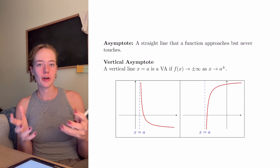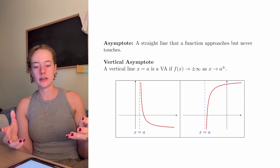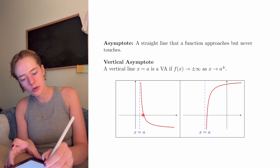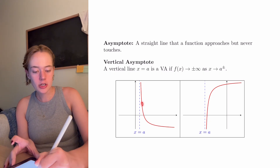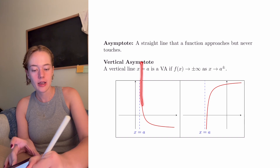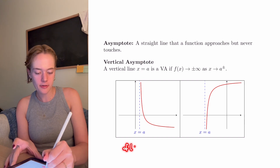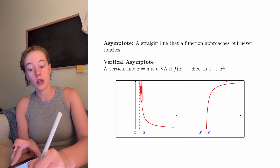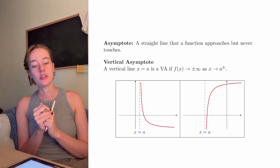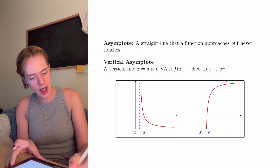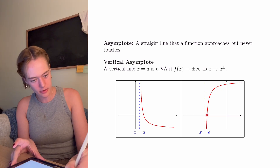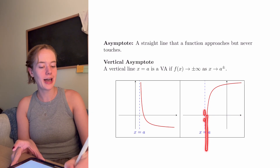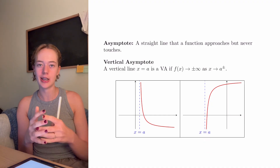Here are a couple of examples of vertical asymptotes. For the one on the left, as our x's get really, really close to a, our function is tending towards infinity — there's never going to be an f(a) value, it just doesn't exist. We get really close to this asymptote, but we never actually touch it. Similarly, on the right, as our function approaches a from the right, our function tends towards negative infinity and never actually touches that asymptote.